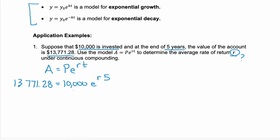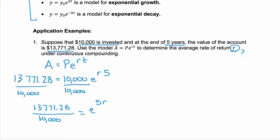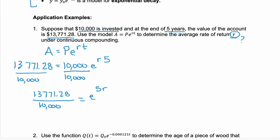So we have an exponential form, and what we want to do is isolate that exponent. Let's divide both sides by 10,000. We can leave the left side as a fraction: 13,771.28 divided by 10,000. We're going to leave everything in fraction form until the end when we put it all in our calculator — that keeps us from over-rounding.